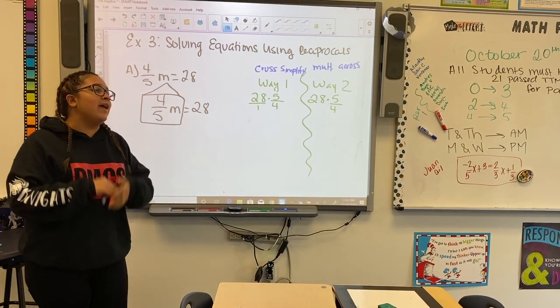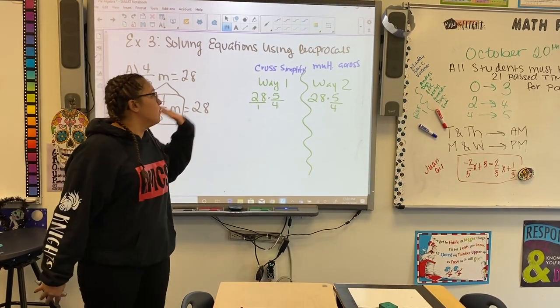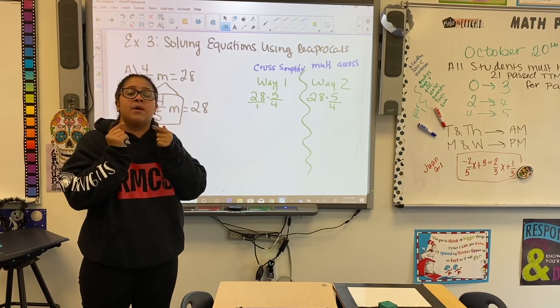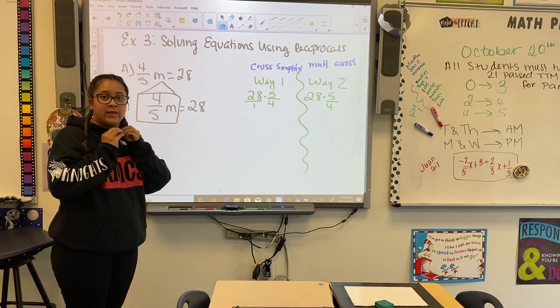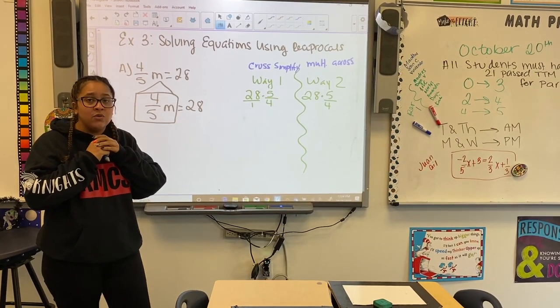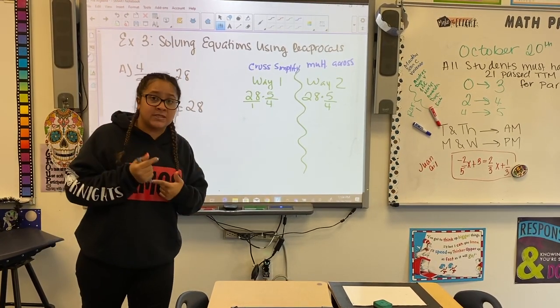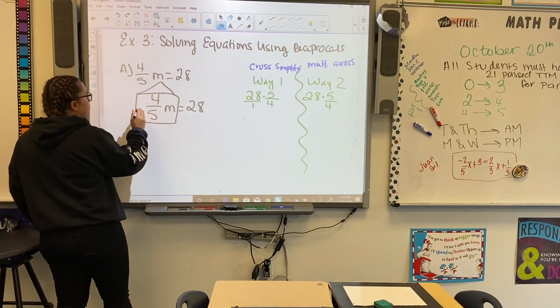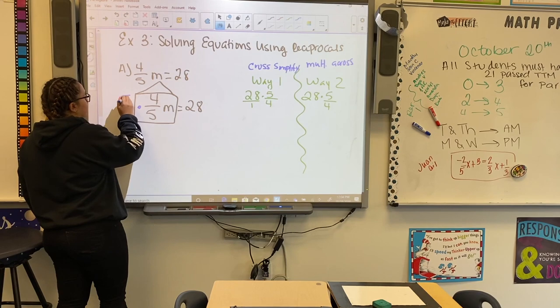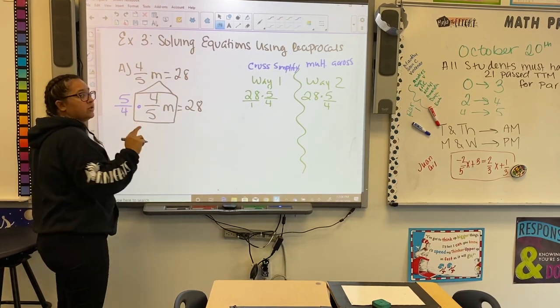How do I get rid of any number that I'm trying to move over to the other side? Inverse operation. What is 4 over 5 doing to the m? Multiplying. So what do we have to do? We have to do the opposite, which is division, which is the same as multiplying it by its reciprocal. We just have to flip it.